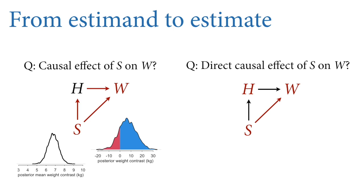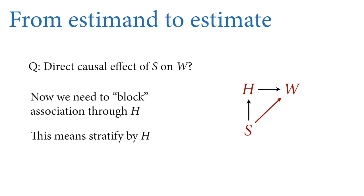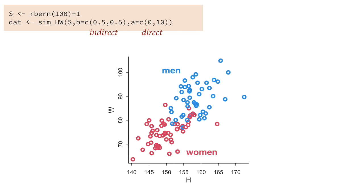Now we address the second estimate: the direct causal effect of sex on weight. We need another model because we have to partial out the indirect effect through height — sometimes people say 'block' or 'control for' it, though I prefer 'stratify by height' to statistically block the association between sex and weight that is transmitted through height. In our generative model there are parameters for both the indirect and direct effects: B is the slopes (one per sex) and A is the direct effect.